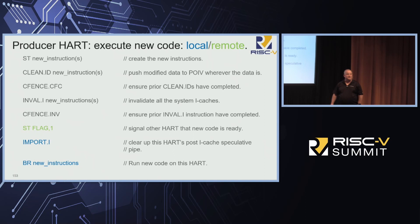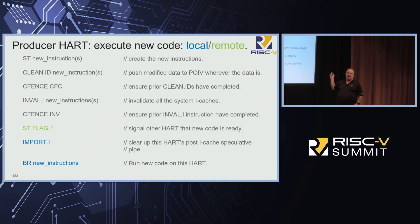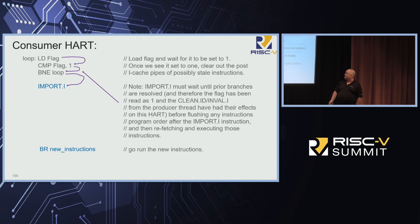Two ways: if we're going to execute on a separate hart remotely, do a store to a flag that tells that other hart 'hey come and get it, the instructions are ready.' If you're going to execute on the local hart, we have an instruction called import.I. Import.I is designed to clear out any stale instructions that are after the I-cache but in your execution pipes that haven't executed yet — the inval.I we executed did not clear those pipes. Import.I does. Then we can branch to the new instructions.